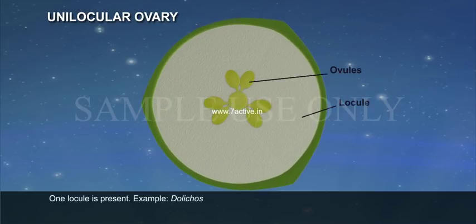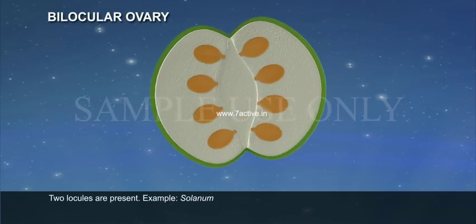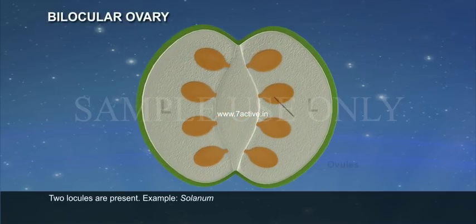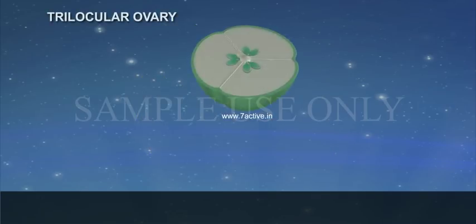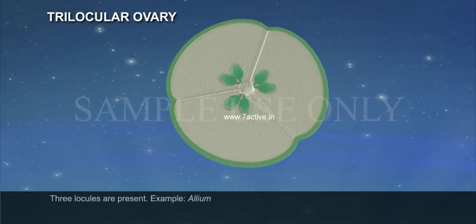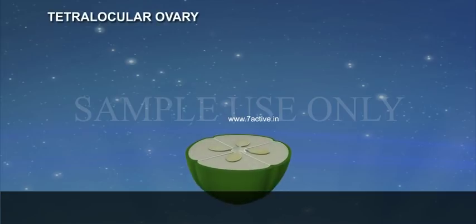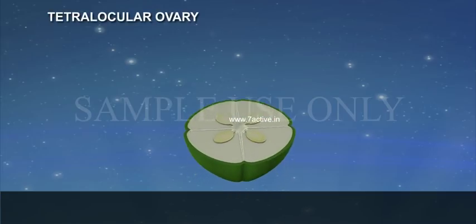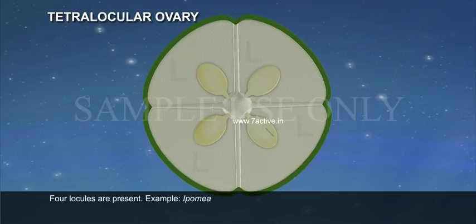Unilocular ovary: one locule is present, example Dolichos. Bilocular ovary: two locules are present, example Solanum. Trilocular ovary: three locules are present, example Allium. Tetralocular ovary: four locules are present, example Epomia.